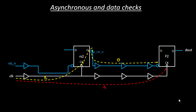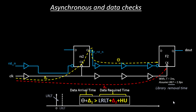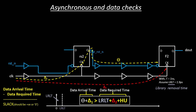We also have removal violations, which are very similar to hold violations. The library removal time (LRLT) is 1.9 picoseconds — instead of library hold time, it's called library removal time because it's associated with the reset signal. The removal check equation mirrors the hold check: data arrival time is theta plus delta one, and data required time is delta two plus library removal time plus hold uncertainty. Data arrival time minus data required time gives the removal slack. In your timing reports, you may see recovery and removal violations — this is what they mean.